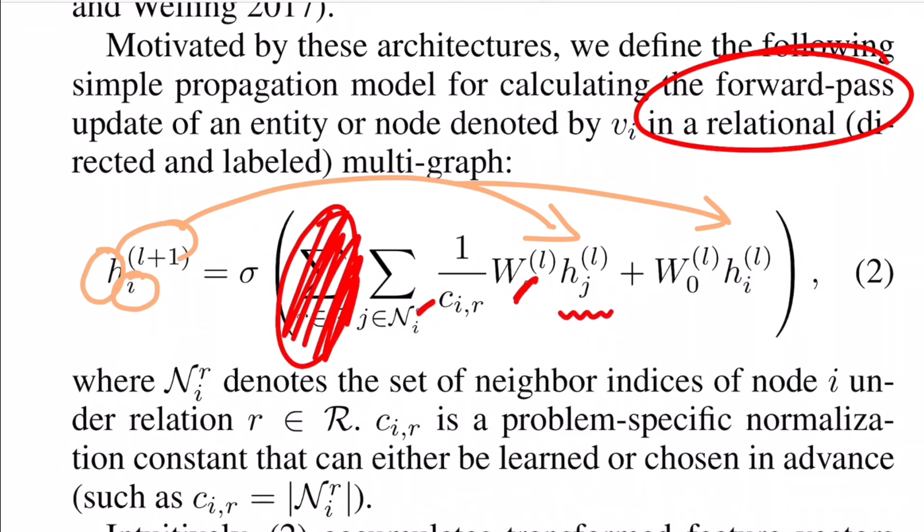You take the hidden representation of the neighbors where J is nothing but the neighbors of I. For every layer you define a weight matrix that is shared by all the neighbors for that layer. You do the linear transformation. You sum it over for all the neighbors that you have and then you normalize it. Okay, so this R also has to be removed.